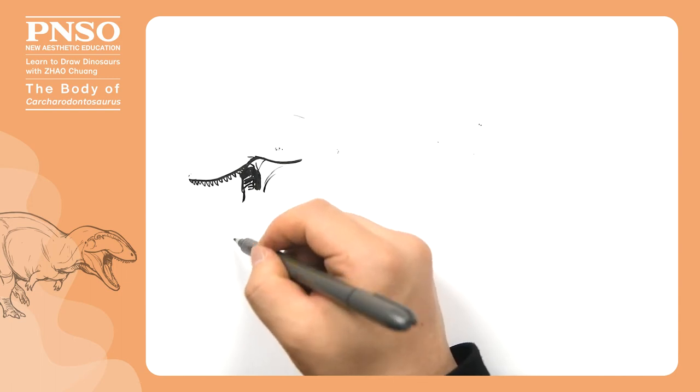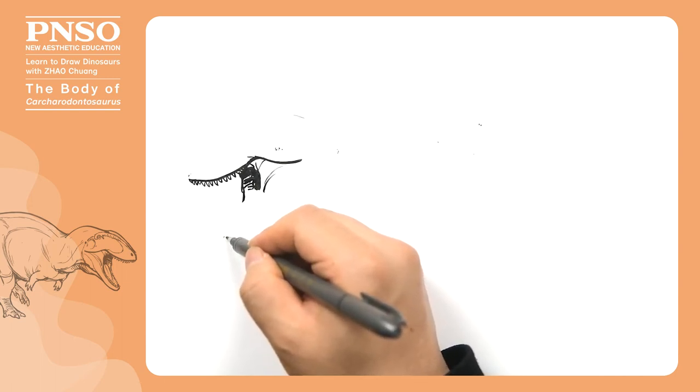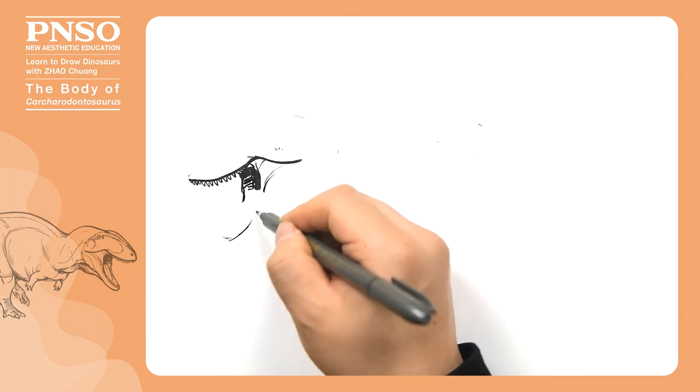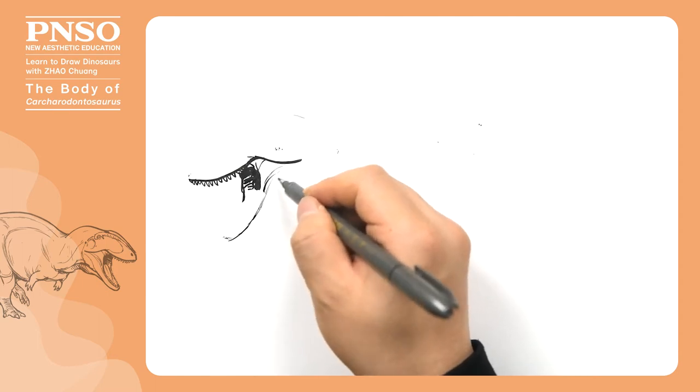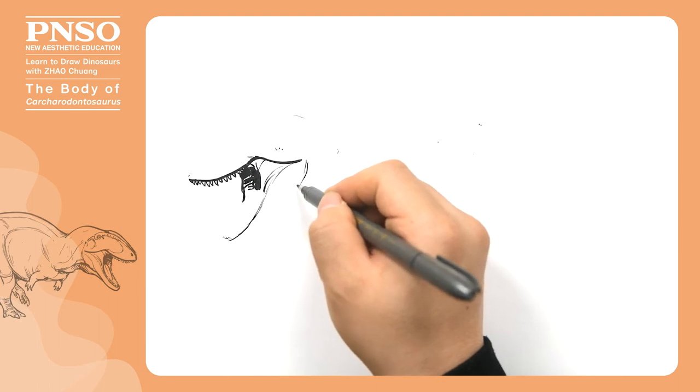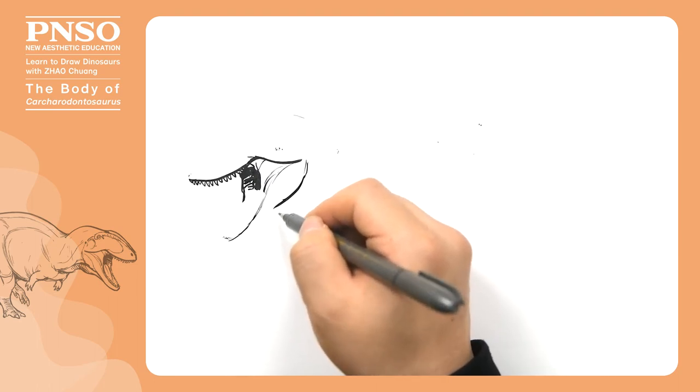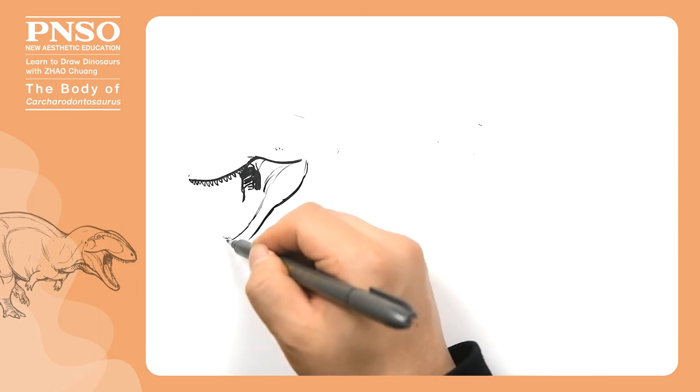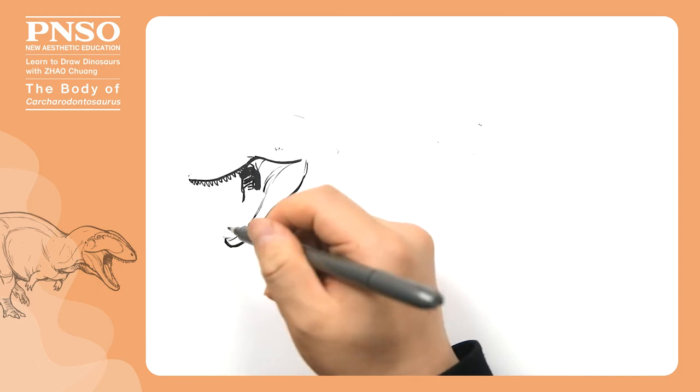The throat. After that, we move on to its lower jaw. Let's draw its mouth open. Its lower jaw was thick at the rear and thin at the front. The end of its lower jaw was not sharp, but slightly blunt.